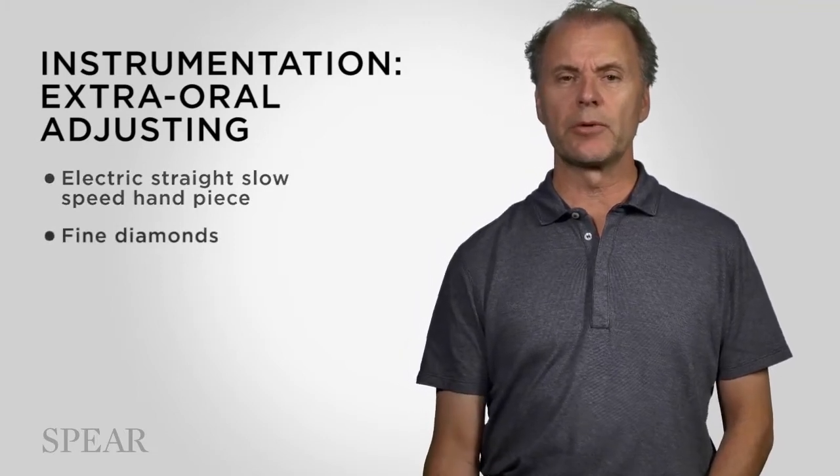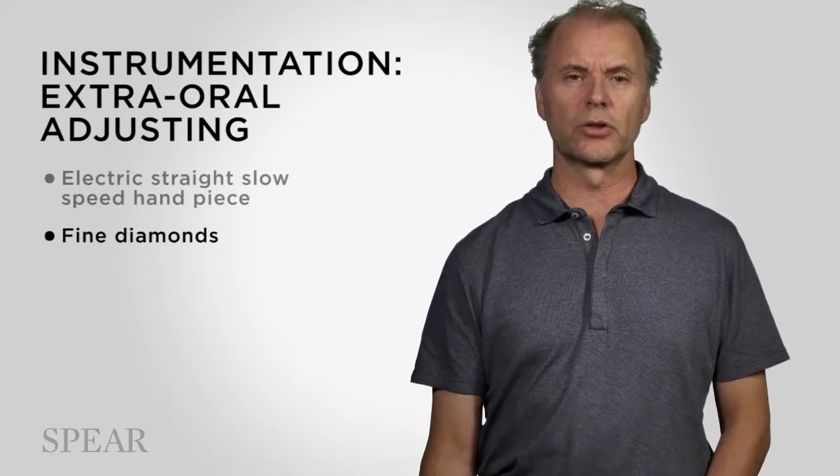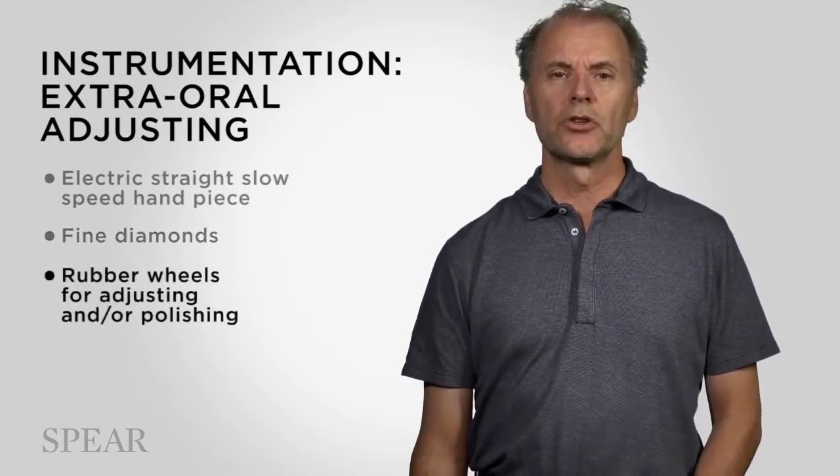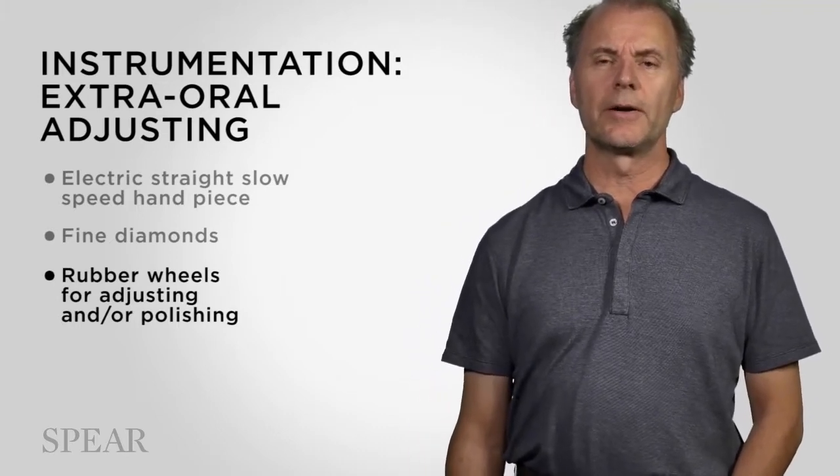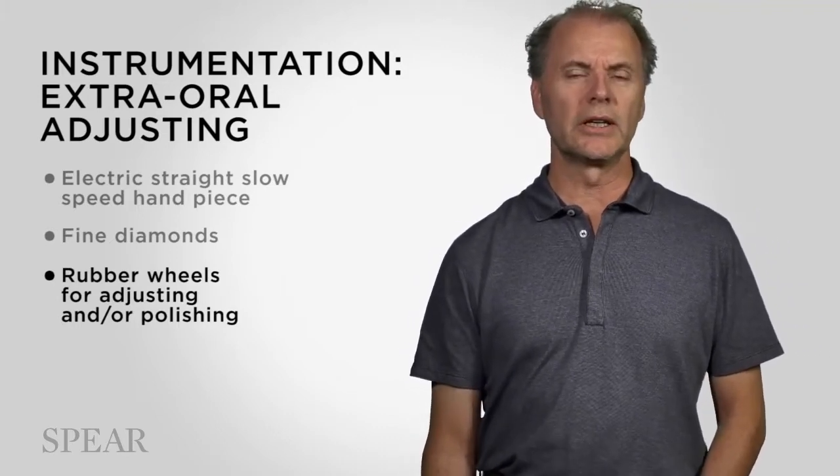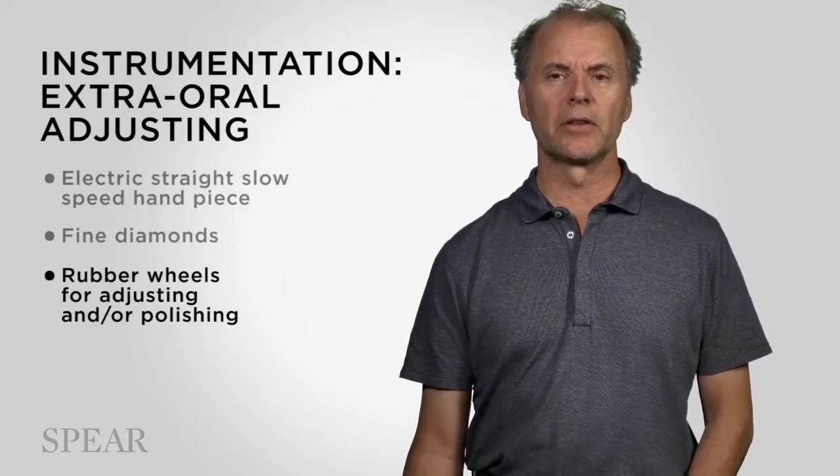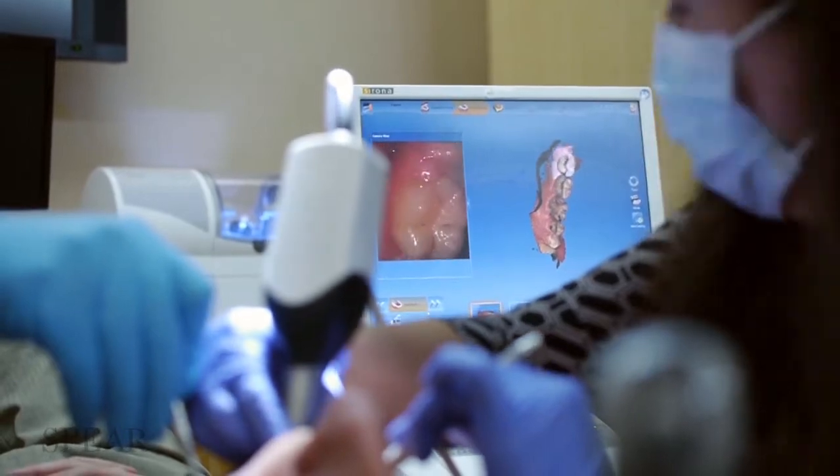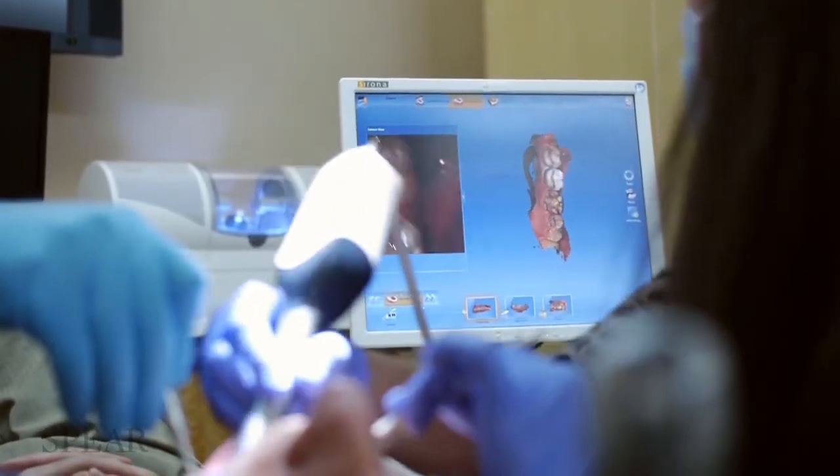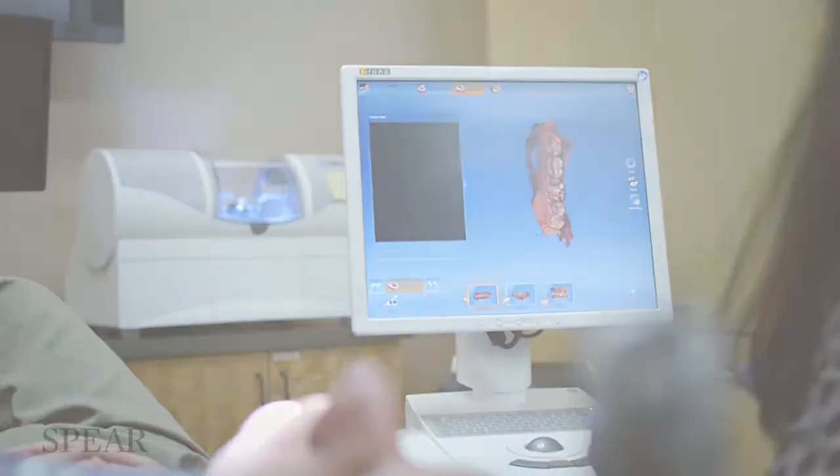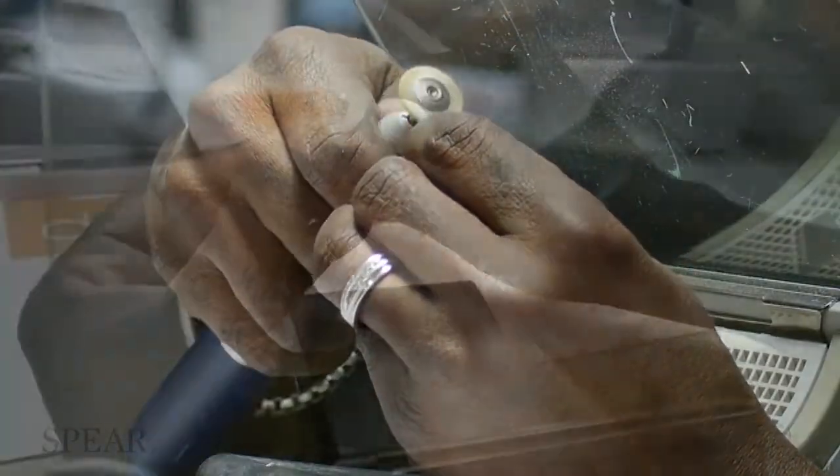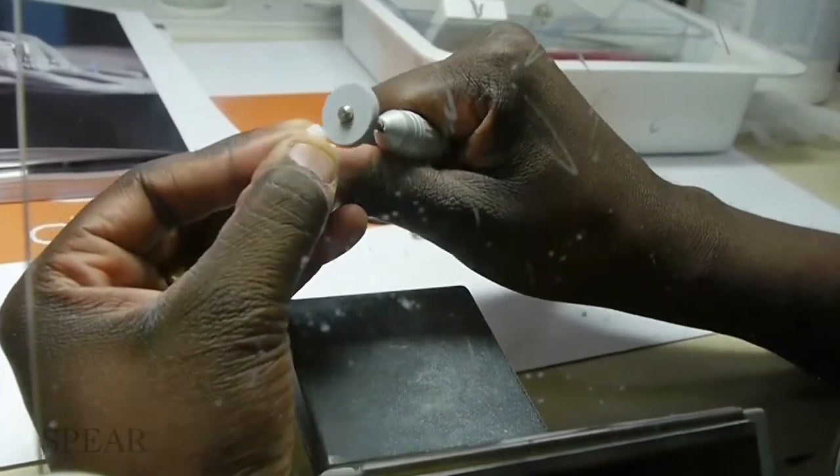We'll talk about the diamond burrs to use, and the strong suggestion will be fine diamonds, and then the rubber wheels. If you think about what's happening extra orally, it's no different than what would happen in the laboratory. If you're doing in-office milling, you're doing probably some of these procedures as routine. But if you're not doing in-office milling, many clinicians are almost afraid to grind on or adjust ceramic because we're uncertain on how to manage the technique.